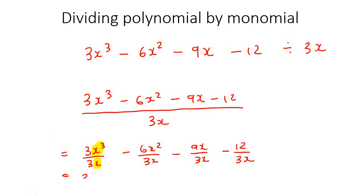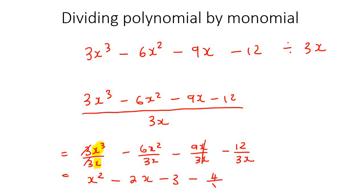So you'd end up with — the 3's cancel, leaving x squared. Then 6 divided by 3 is 2, and x squared divided by x gives us x. Then 9 divided by 3 is 3, and the x's cancel. For the last part, 12 divided by 3 is 4, but there's still 1x at the bottom. So you'd write your answer like that. For the rest of this lesson, we're just going to practice a couple of different types of these questions.